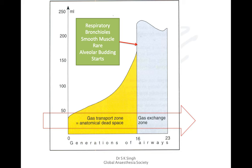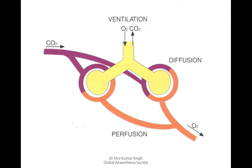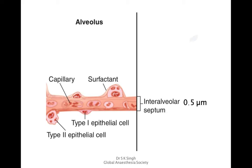The oxygen we breathe reaches the alveoli through the gas transfer zone, which constitutes the anatomical dead space. In human beings, this is around 150 mls. It then passes through the gas exchange zones, starting from the respiratory bronchioles reaching the alveoli, where gas exchange occurs: oxygen is taken up and carbon dioxide is given out.